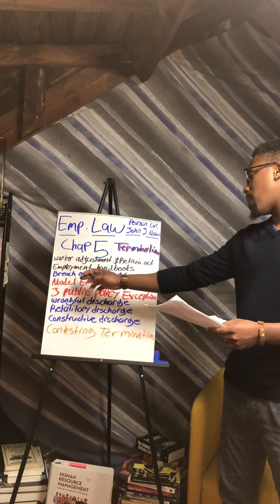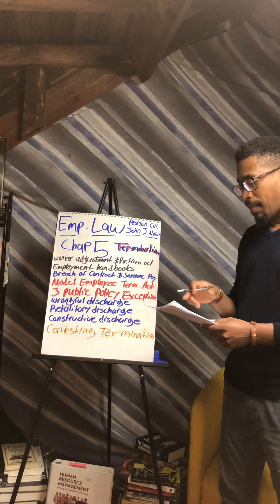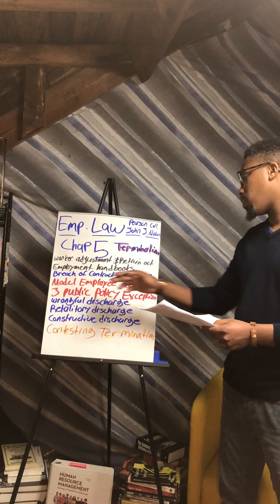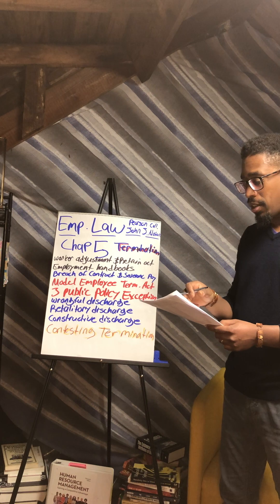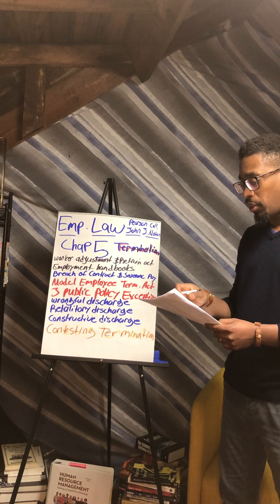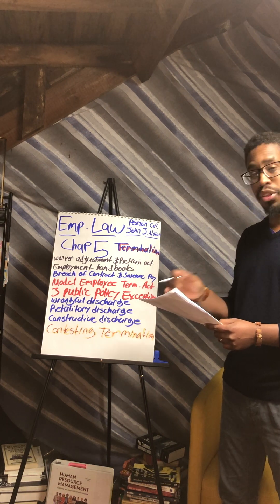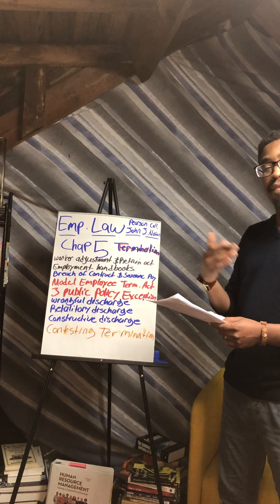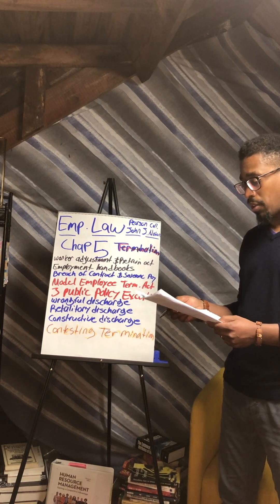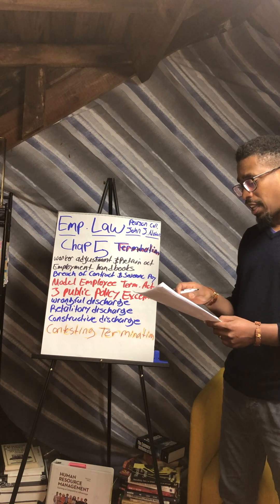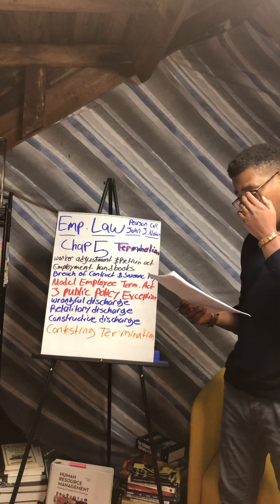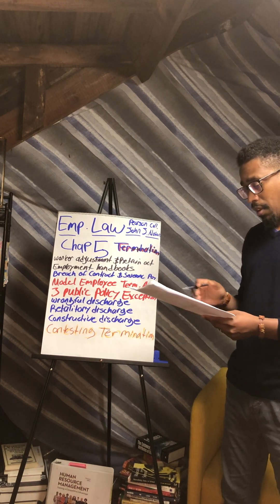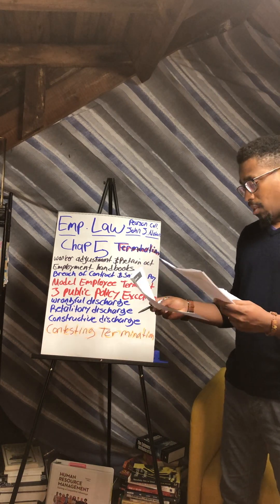Next is the Model Employment Termination Act — META. Under META, an employer can only discharge an employee with cause. This is advantageous to employers because it prevents litigation, and advantageous to employees because they can't be terminated at will. It has only been adopted as state law in Montana, but it seems like a strong framework.